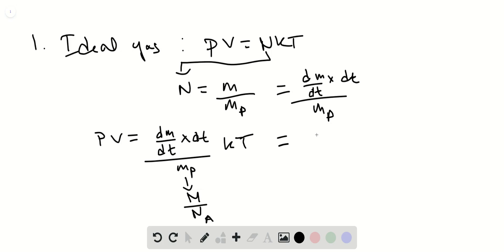So plugging that in there gives you this equation, which is dm/dt times dt over m over nA, m being the total mass.